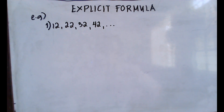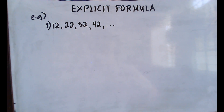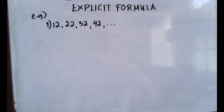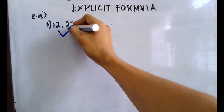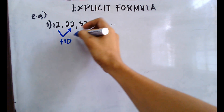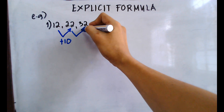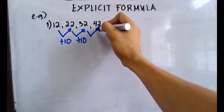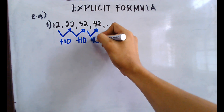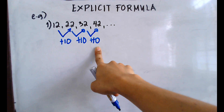Today we will be talking about the explicit formula of an arithmetic sequence. Suppose we have the sequence 12, 22, 32, 42, and so on. Let's try to identify first if this is an arithmetic sequence. From 12 to 22 you add 10, from 22 to 32 you add 10, from 32 to 42 you add 10.